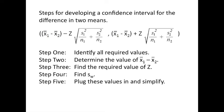In the first step, we're going to identify all the required values. Next, we're going to determine the values of x̄₁ minus x̄₂. We're going to find the z-score that is necessary to catch a specific percentage of data. We're going to calculate this weighted standard deviation, and then we're going to plug those values in and solve.